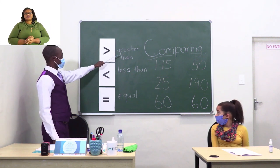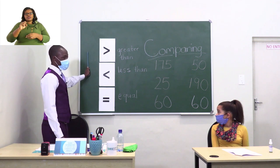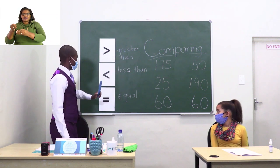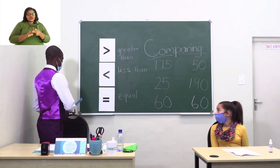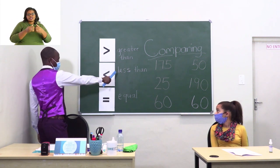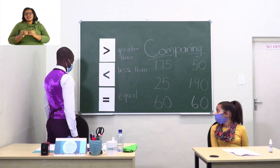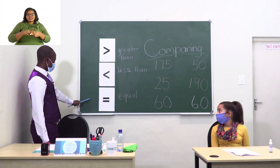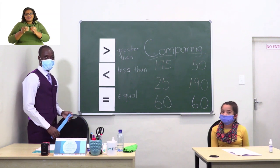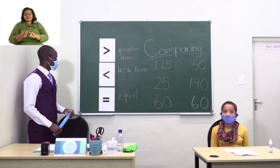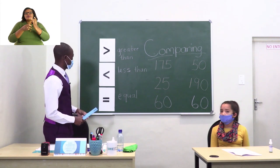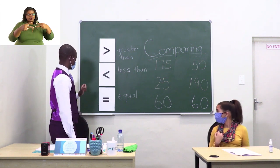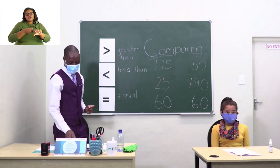We use greater than when you are starting with a big number followed by a smaller number. We use less than when you are starting with a smaller number. We use the equal sign when the numbers are of the same size. The greater than and less than signs are always pointing at the smaller number.